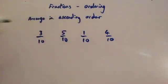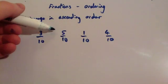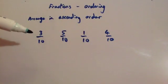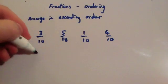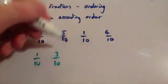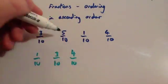So putting these in ascending order, we've got 3 tenths, 5 tenths, 1 tenth, and 4 tenths. In ascending order means from smallest to biggest, so the smallest would be 1 tenth, then 3 tenths, then 4 tenths, and then 5 tenths.